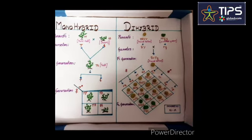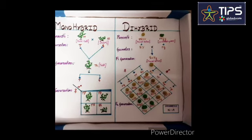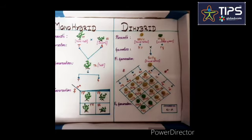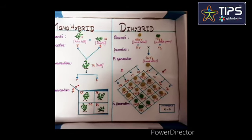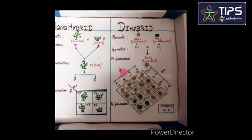The genotypic ratio is 1 is to 2 is to 1 is to 2 is to 4 is to 2 is to 1 is to 2 is to 1 and the phenotypic ratio is 9 is to 3 is to 3 is to 1.